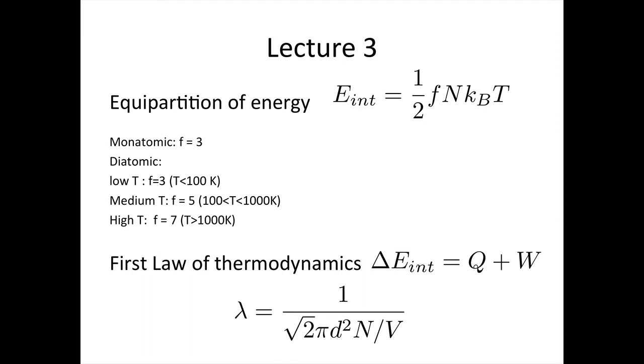So in lecture three, you were introduced to the theorem of equipartition of energy, which tells us about how molecules can store energy. You were introduced to the formula for internal energy, which is 1/2 f N kBT. So f here is the number of degrees of freedom, which depends on the exact molecule. We will be looking at a couple of examples in just a second. N is the number of molecules, kB is Boltzmann's constant, and T is the temperature.